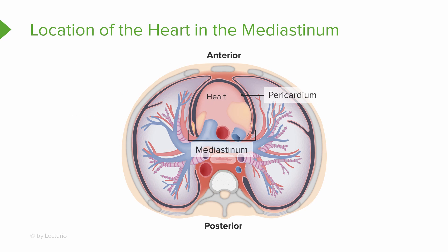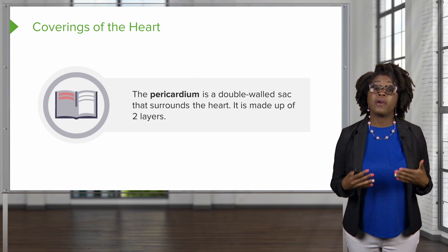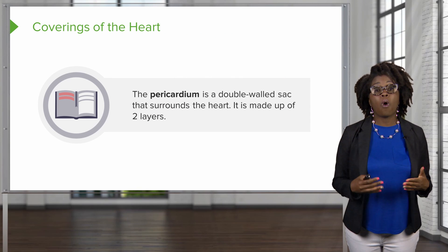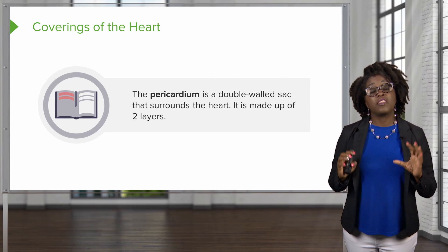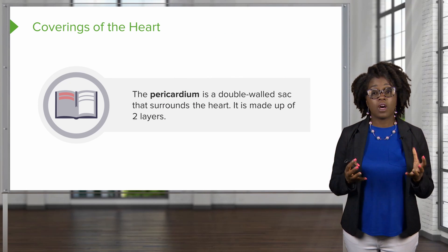If we look from a superior view of the thoracic cavity, we find that the heart sits in the pericardium, which is a serous membrane surrounding the heart and in between the lungs. The pericardium is a double-walled sac that surrounds the heart.